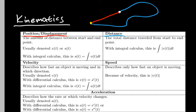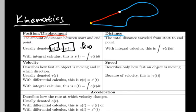The red line represents displacement or position — that just means how far the point is from the initial point, so you draw a straight line between them to get displacement. Displacement and position are usually denoted with x(t) or s(t). That's the standard notation, similar to how f(x) is the common notation for a function, but you don't have to use it.